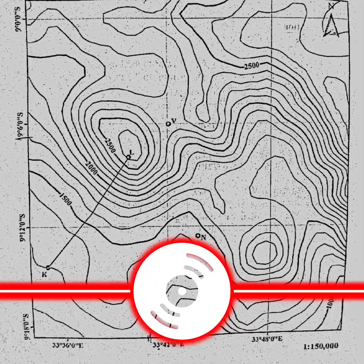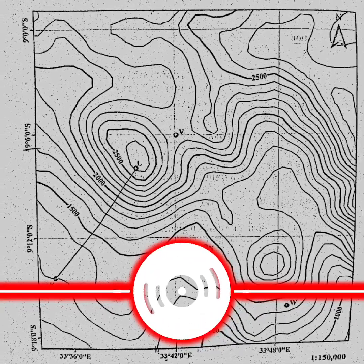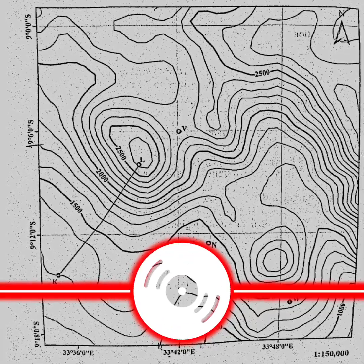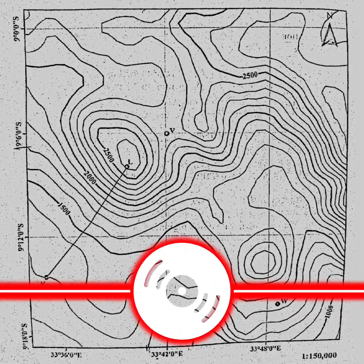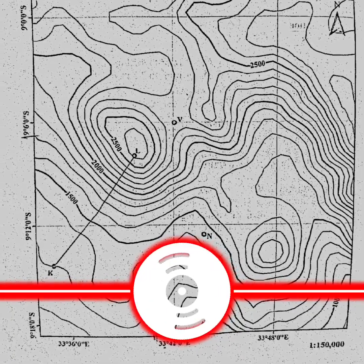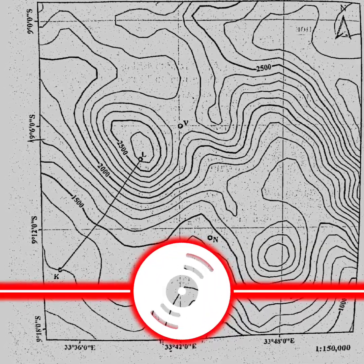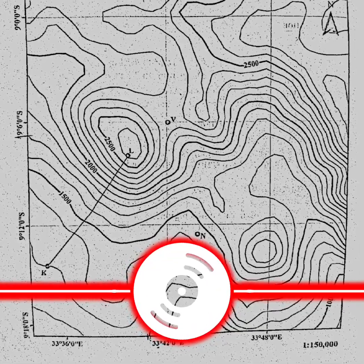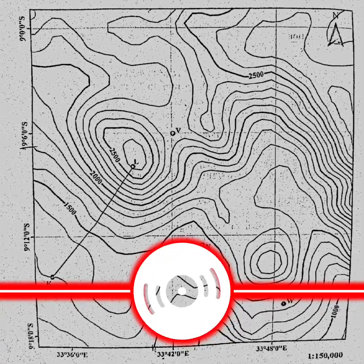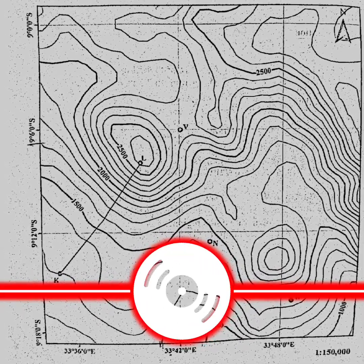From this map, V is found between the options: A) 9°12'0" South and 33°36'0" East, B) 9°6'0" South and 33°42'0" East, C) 9°12'0" North and 33° — so the correct answer for this is D.